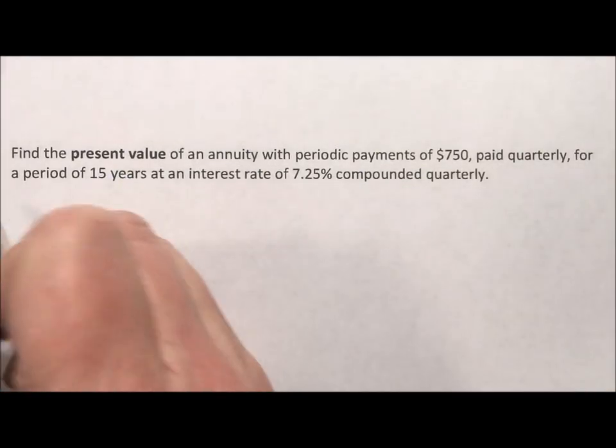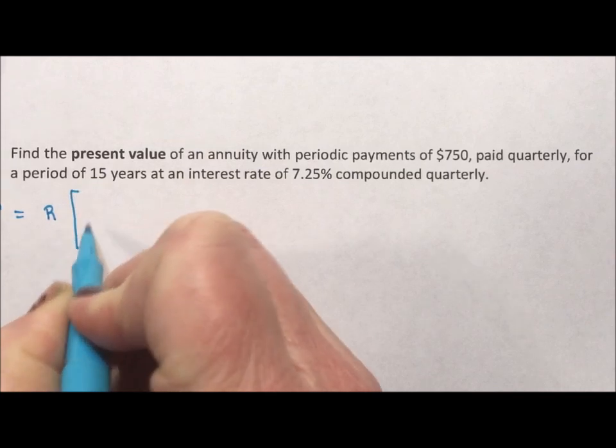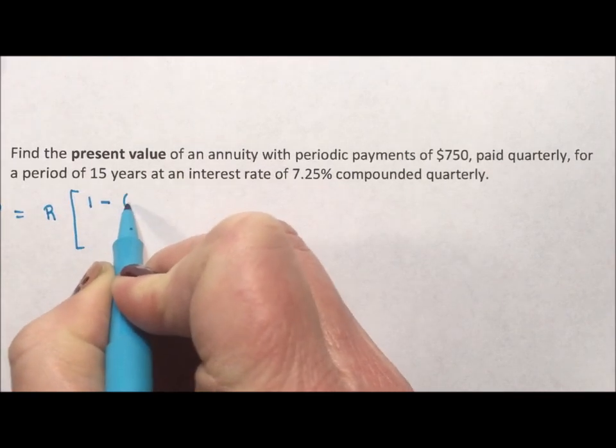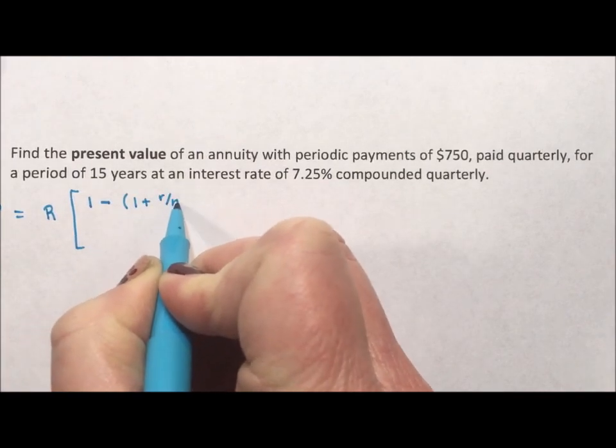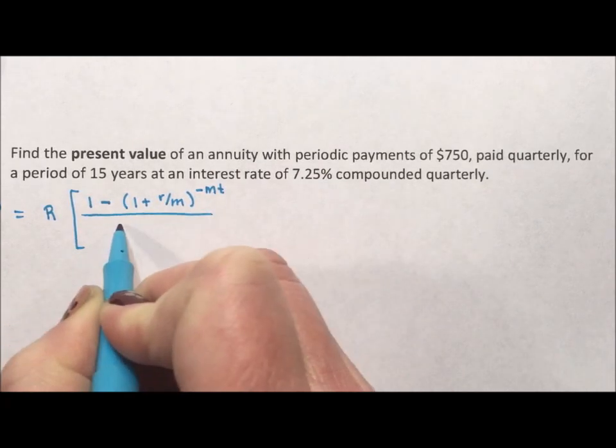What the present value is, the formula is P equals R, 1 minus 1 plus R over M to the negative MT, all divided by R over M.